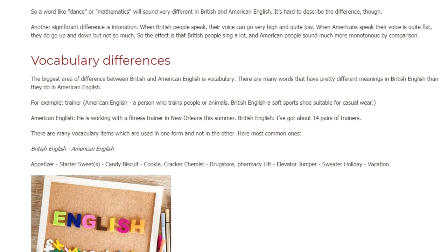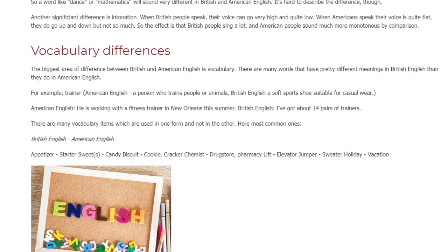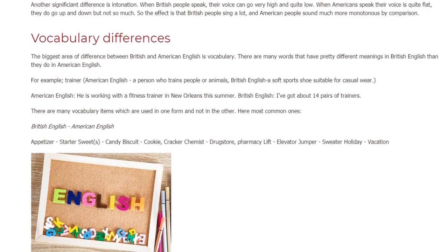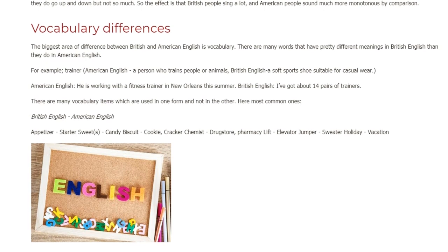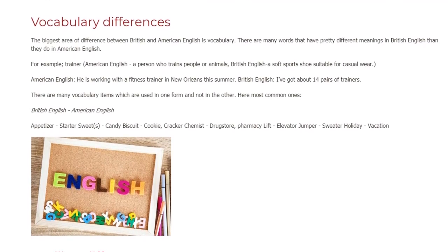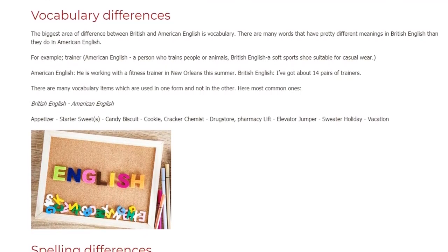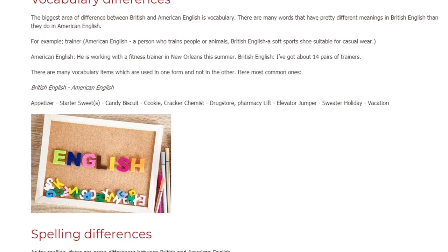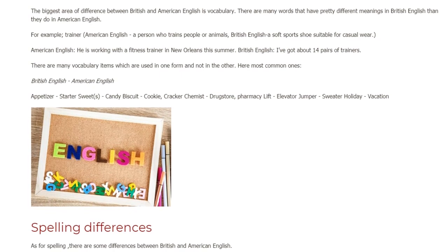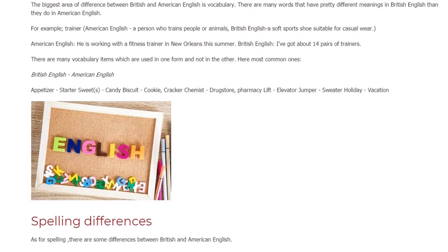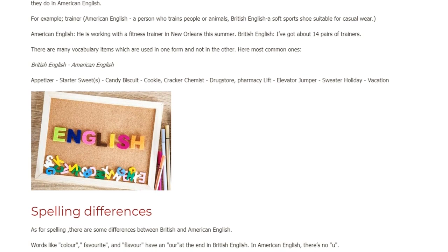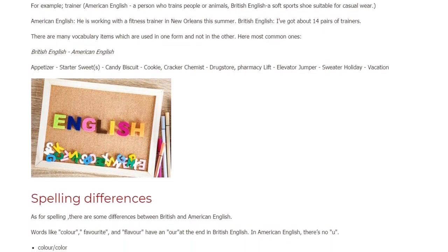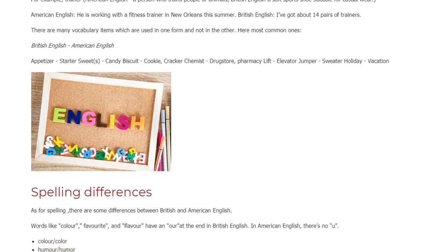Vocabulary Differences. The biggest area of difference between British and American English is vocabulary. There are many words that have pretty different meanings in British English than they do in American English. For example, 'trainer' in American English means a person who trains people or animals, while in British English it means a soft sports shoe suitable for casual wear. American English: 'He is working with a fitness trainer in New Orleans this summer.' British English: 'I've got about 14 pairs of trainers.'